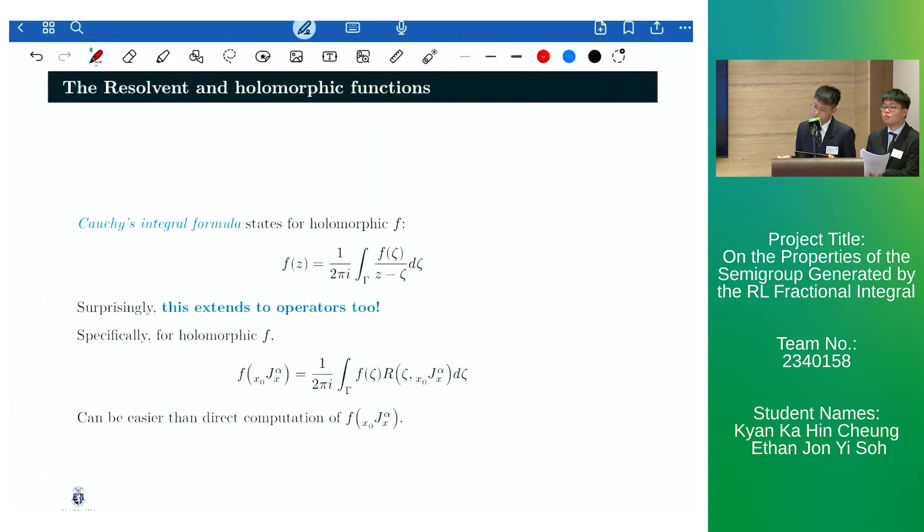Next, another application of our results is that we can use the Cauchy integral formula, which extends to operators as well, to compute f of j alpha. This could be easier than perhaps a direct computation of f of j alpha since we have already derived an explicit expression for the resolvent of j alpha.